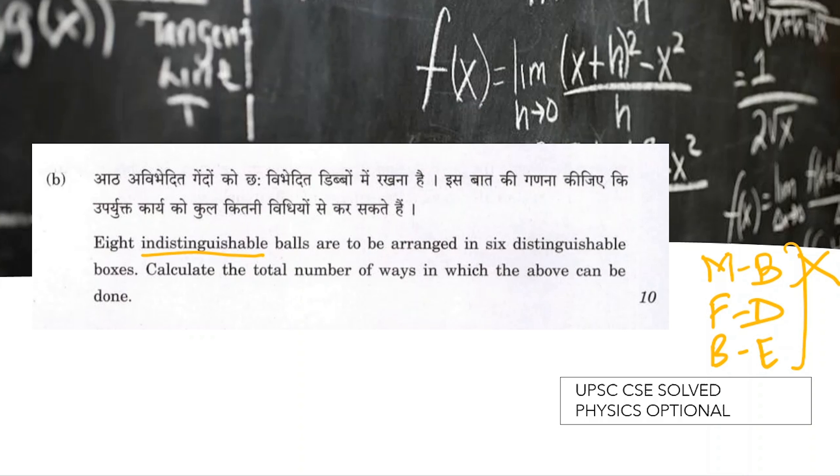Fermi-Dirac has spin up and spin down, so we are restricted to put two particles which are of different quantum numbers in a particular level. These are balls, so we can't use Fermi-Dirac either. We are left with one statistics, so we are going to use Bose-Einstein statistics in this question.